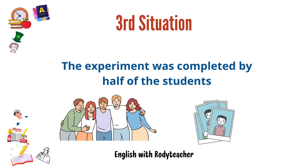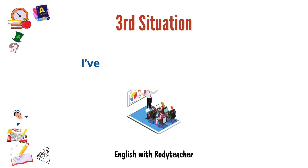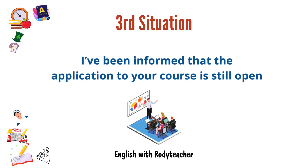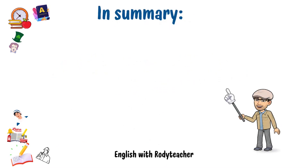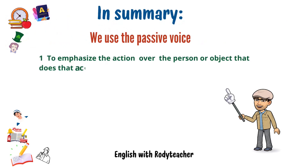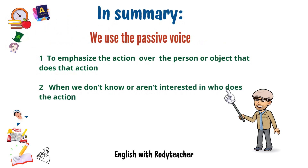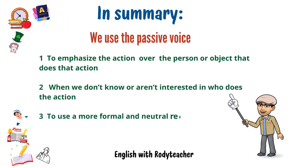Second situation: when we don't know who does the action or when this information is not important. For example, if I say 'My laptop was stolen yesterday,' I don't know who stole it. And in the example 'The exams have been corrected,' it is obvious that the teacher is the person who did the action, so it's not important information.